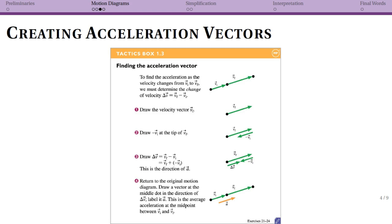I now want to talk about how to create acceleration vectors. In the previous part of the video I showed you two out of three motion diagrams where we had a change in velocity, and therefore a non-zero acceleration. We can use vectors to create our acceleration vector in a graphical manner. The important thing to remember is that we need to use the change in velocity. Average acceleration is defined very similarly to average velocity — it's the change in velocity divided by time.